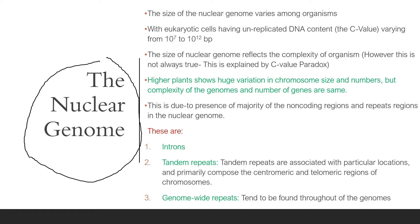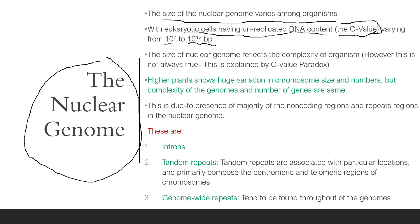The first genome is the nuclear genome. The size of the nuclear genome varies among organisms, with eukaryotic cells having unreplicated DNA — this is the nuclear genome content, known as the C value. The C value is the amount of unreplicated DNA present in eukaryotic cells, and it may vary from around 10 to the power of 7 to 10 to the power of 12 base pairs.